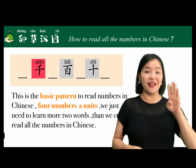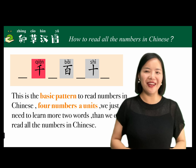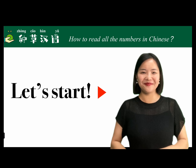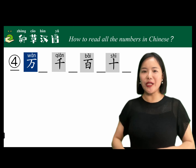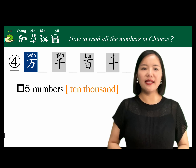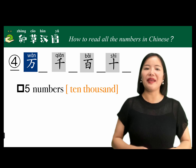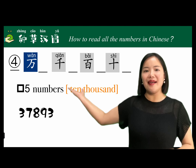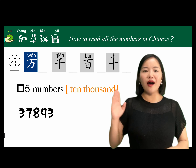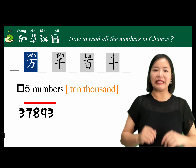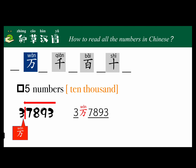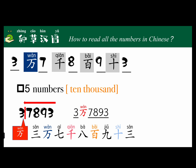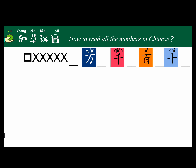This is the basic pattern for reading numbers in Chinese: four numbers as a unit. We just need to learn two more words, and then you can read all numbers in Chinese. The first of these two words is 万 (wàn), which means ten thousand. When we read numbers with five or more digits, we count from back to front, four digits as a unit, and draw a comma.